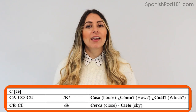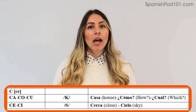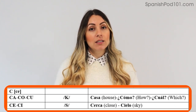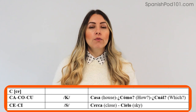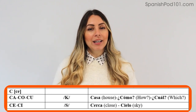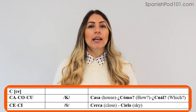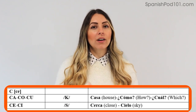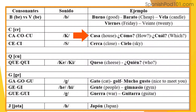The next one is C. The C will have a different sound in Spanish depending on which vowel follows it. For C-A, C-O, C-U in Spanish, the C turns into a hard K sound — we say ca, co, cu. For example: casa, como, cual.